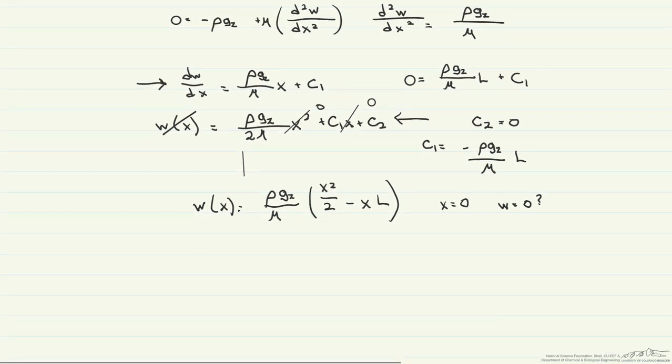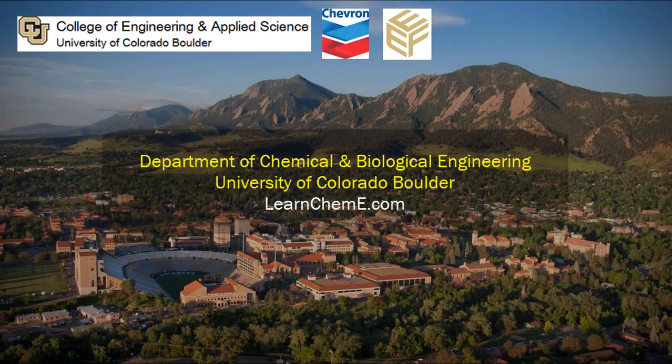Now let's look at the second part. So I'll rewrite this, dw dx is equal to rho g z divided by mu times x plus our c1, which is minus rho g z mu times L. And this has to be equal to zero. So if you look at this, what you see is that x minus L equals zero. And therefore the derivative of w with respect to x does equal zero at x equals L. So there are no shear stresses at the interface between the film and the air.